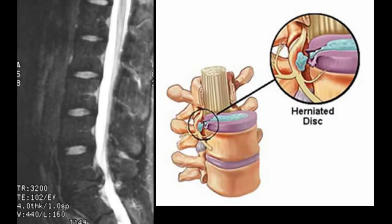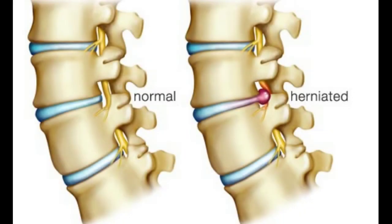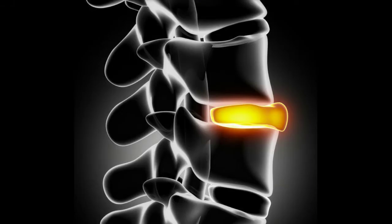Herniated discs are a fairly common condition that most people are familiar with. According to the Mayo Clinic, this condition can cause irritation in the nearby nerves and result in pain, numbness, or weakness in the arms and legs. On the other hand, many people experience no symptoms from a herniated disc, and most people who have one don't need surgery to correct the problem.